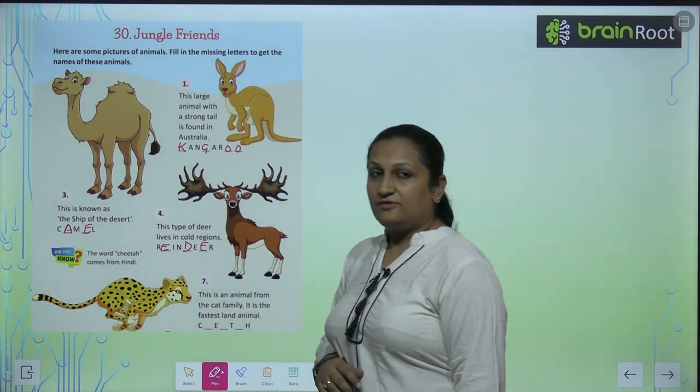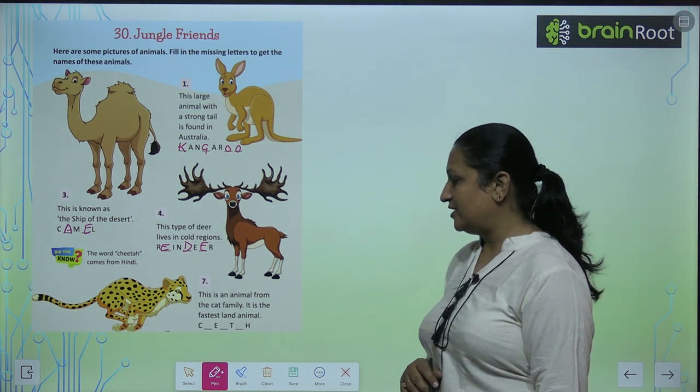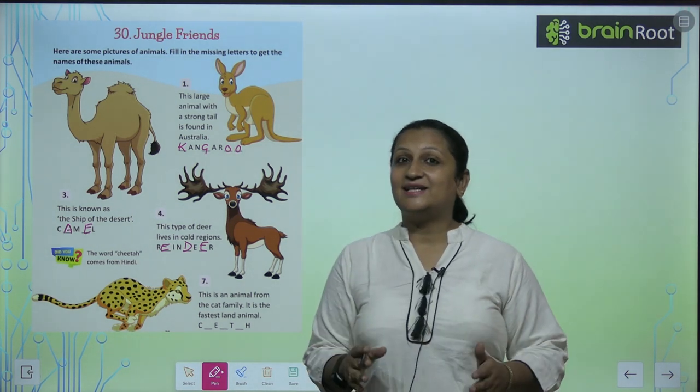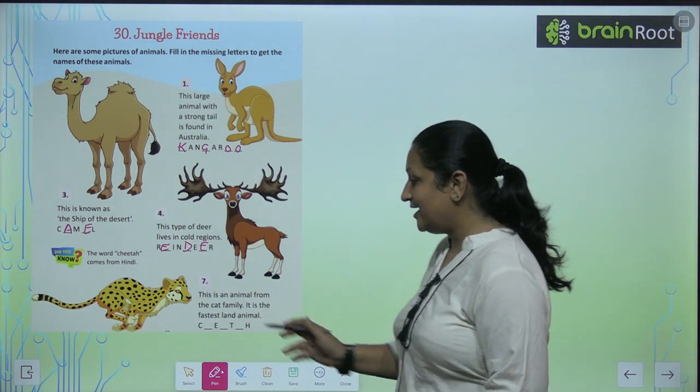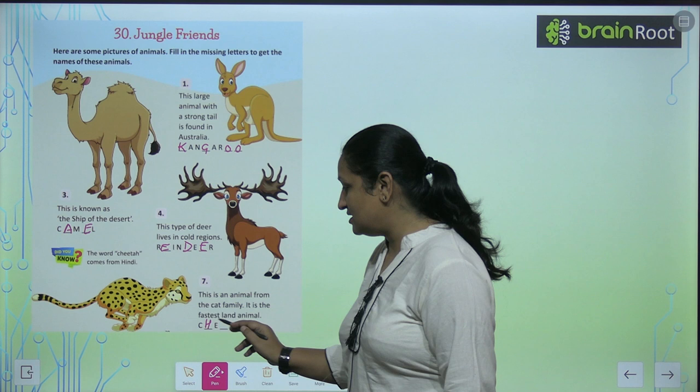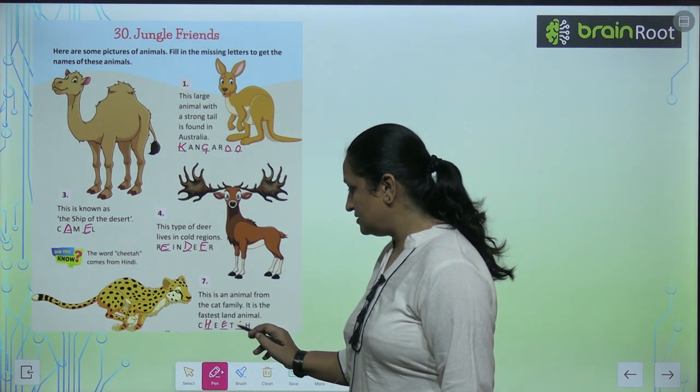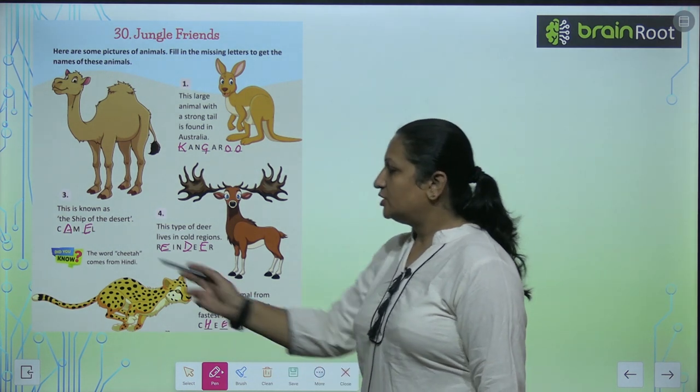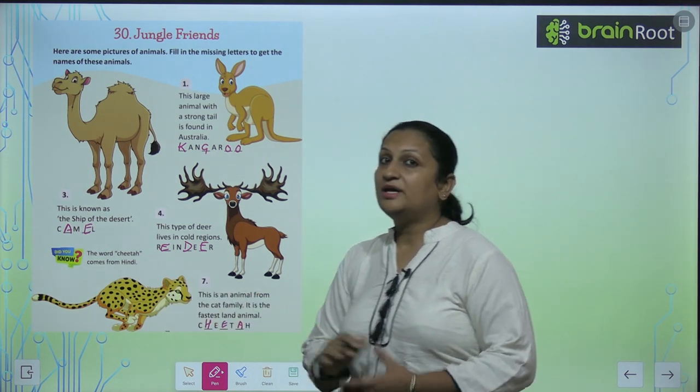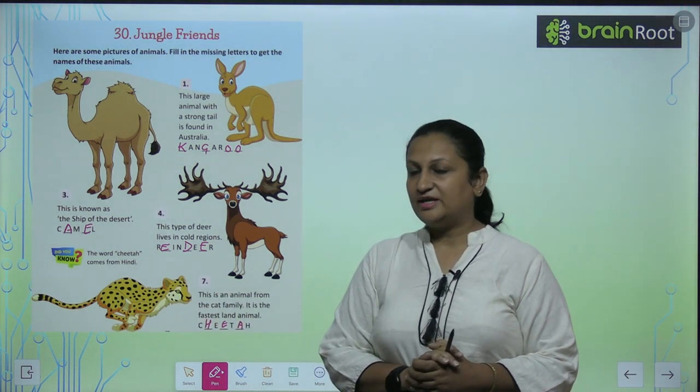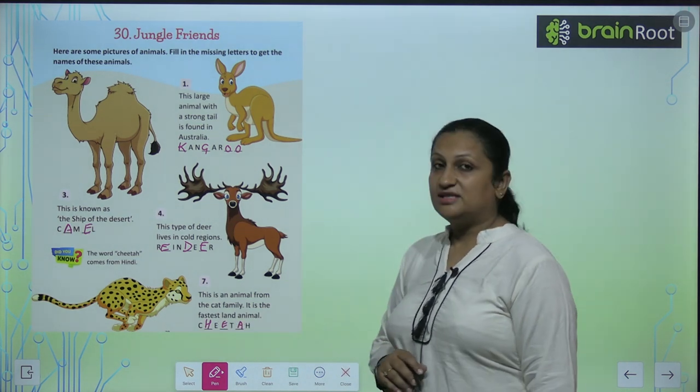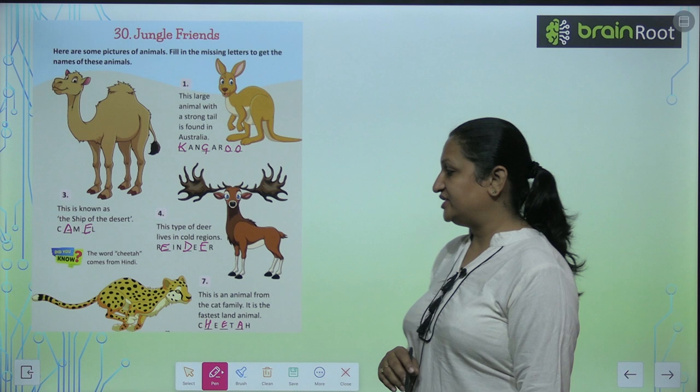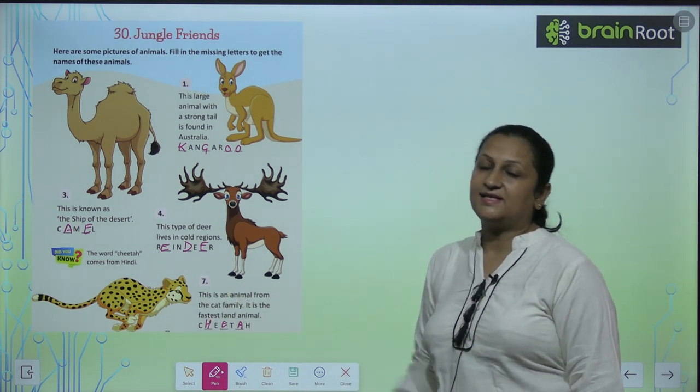Now see the seventh one, children. This is an animal from the cat family. It is the fastest land animal. What is its name? Its name is cheetah. The word cheetah comes from Hindi. This word is taken from our Hindi language. Cheetah, and it is the fastest animal.